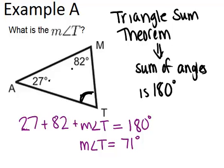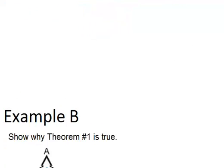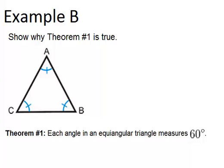All right, let's go on to Example B. Example B says show why theorem number one is true, and theorem number one says each angle in an equiangular triangle measures 60 degrees. Well, first let's think about what equiangular triangle means. Equi means the same, so equiangular means all angles are congruent.